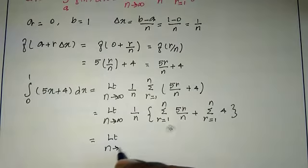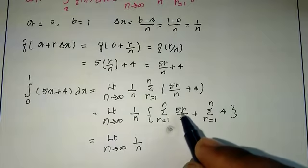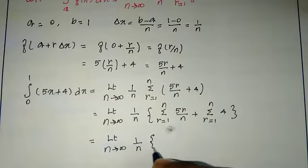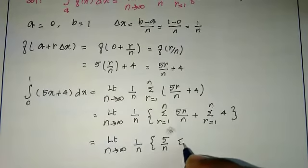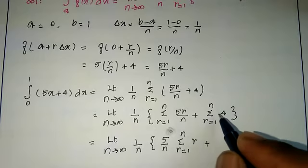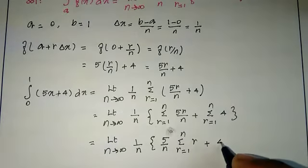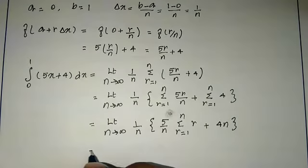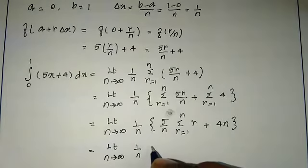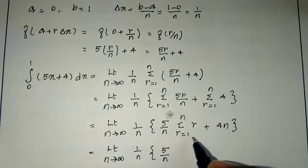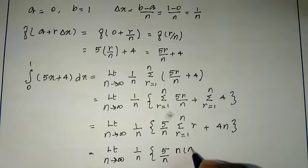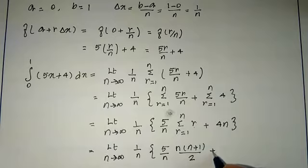Limit n tends to infinity of (1/n): the term 5/n times summation r equal to 1 to n of r, plus 4 times n (since 4 is constant, it adds n times). Substituting the sum of natural numbers formula: 5/n times n(n+1)/2 plus 4n. This gives limit n tends to infinity of (1/n) times [5(n+1)/2 plus 4n].